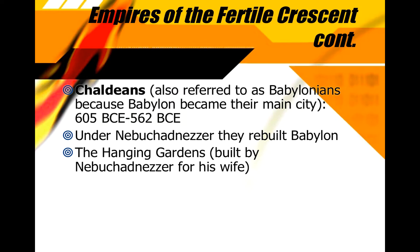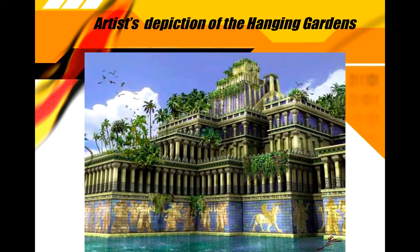Their key ruler was Nebuchadnezzar. He really restructured Babylon, making it a shining example of early cities in the Mesopotamian region. One of the things Nebuchadnezzar is particularly noted for is his construction of the Hanging Gardens of Babylon, which were built for his wife, who he had brought to the country from the land of Medea. She was very homesick, and so Nebuchadnezzar constructed this mountain-like garden structure for her to remind her of the mountains of home.